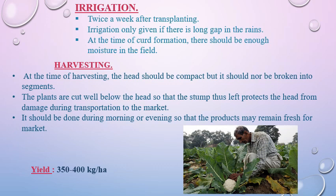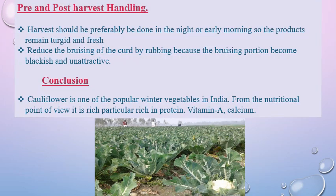Yield: 350 to 400 quintals per hectare. Pre and post-harvest handling: harvest should preferably be done at night and early morning so the produce remains turgid and fresh. Reduce the bruising of the curd by rubbing, because the bruised portion becomes blackish and unattractive.